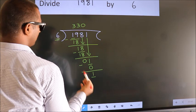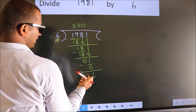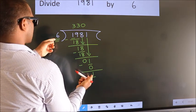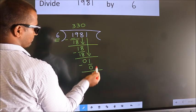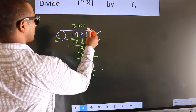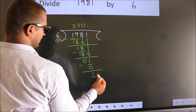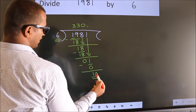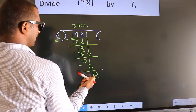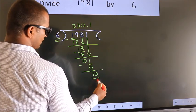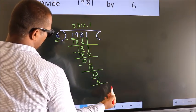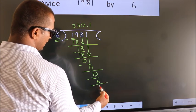Here we have 1. Here 6. 1 smaller than 6. And we did not bring any number down. So now we can put dot, take 0. So 10. A number close to 10 in 6 table is 6 once, 6. Now we subtract. We get 4.